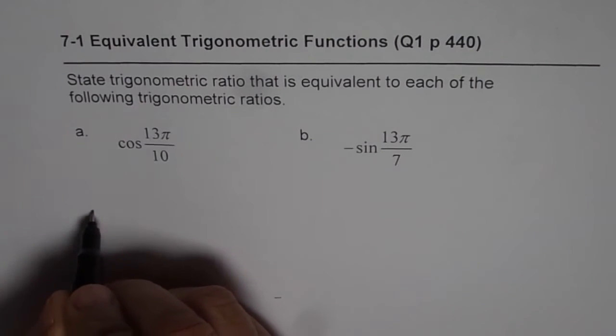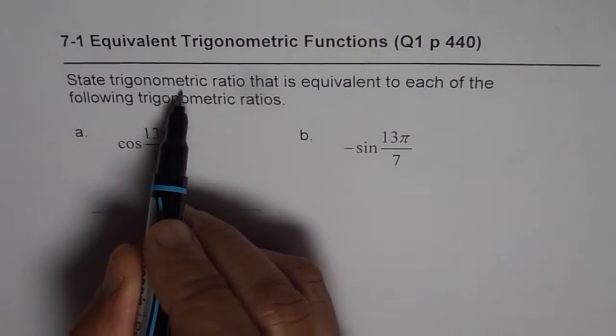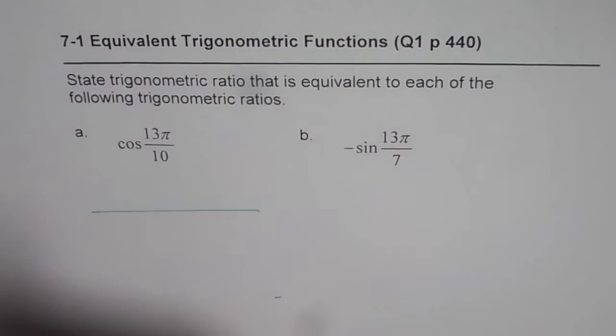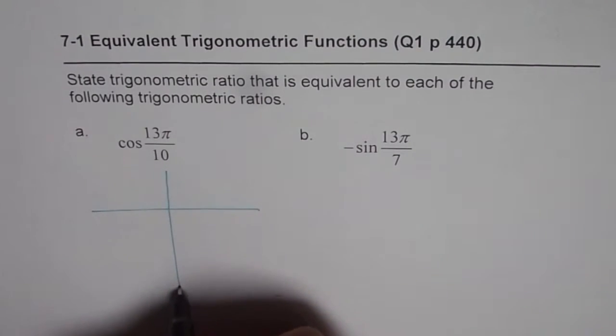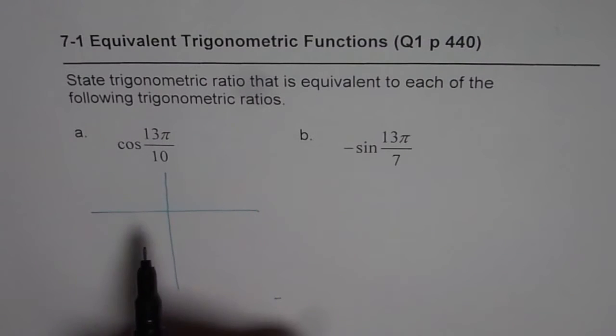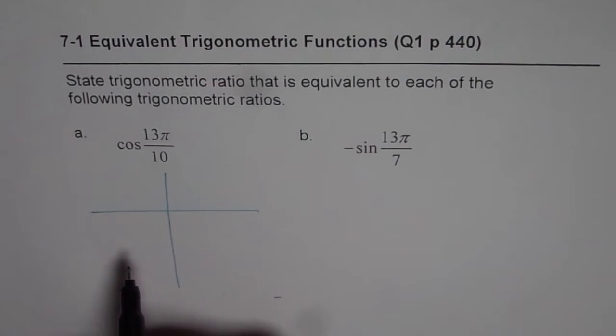Now, here, when we say state trigonometric ratios that are equivalent, then safest is to see the angle with the horizontal and relate it with the related acute angle. So that way you are not going to make any mistake.